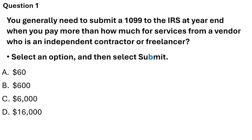Let's start with Question 1. You generally need to submit a 1099 to the IRS at year end when you pay more than how much for services to a vendor who is an independent contractor or freelancer. The four options are $60, $600, $6,000, and $16,000. The correct answer is $600.